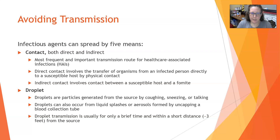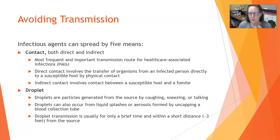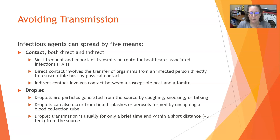Infectious agents can spread by five means. The first is contact — direct and indirect — which is the most frequent and important transmission route for healthcare-associated infections. Direct contact involves transfer of an organism from an infected person directly to a susceptible host by physical contact. Indirect contact involves a susceptible host and a fomite — an inanimate object like a doorknob, elevator button, or soda machine button — touched by someone with an infection who didn't have clean hands, and then the next person touches the same object and picks up the infection.